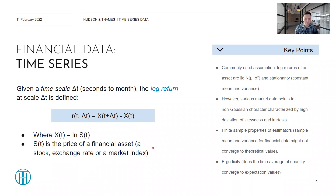There are some key points worth mentioning about this log return variable. In the academic literature, there is often an assumption that log returns are IID — independent and identically distributed — and take values from a normal distribution with some mean mu and variance sigma squared. They're also often assumed to be stationary; in particular, it's assumed that their mean and variance is constant, not changing across data points in the time series.